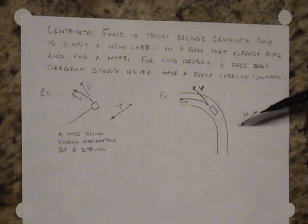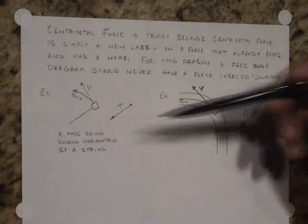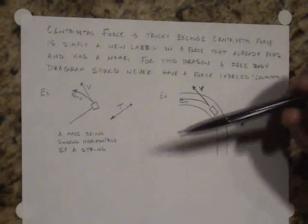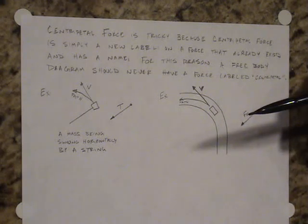So this is what it means when we say that a free body diagram should never have a force labeled as centripetal because the centripetal force is simply a way of relabeling or renaming some force that already existed in the situation, the tension or the friction. Now, the friction and the tension are not the only two forces that can produce centripetal acceleration. There's a number of other forces that could also produce centripetal acceleration.